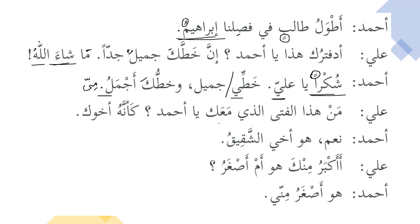Aliun: man hadha al-fata al-ladhi ma'aka ya Ahmadu — who is this young man who is with you, oh Ahmad? Ka'annahu akhuka — it looks like he is your brother. Ka'annah is one of the sisters of Inna. We have learned about Inna, La'alla, Lakinna, and now Ka'annah. Ka'annahu akhuka — hu will be ismu Ka'annah, akhuka will be khabaru Ka'annah — that's why it is marfu'. Ka'annahu is basically harfu tashbih, used for tashbih — for similarity: it looks like he is your brother.